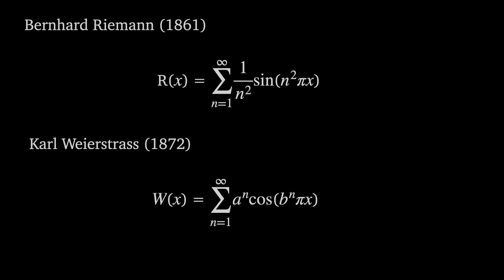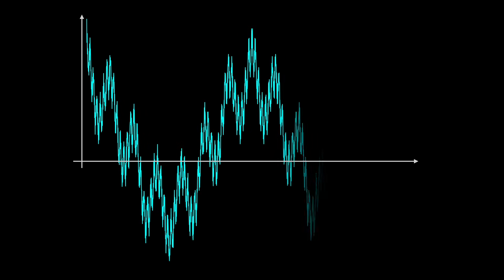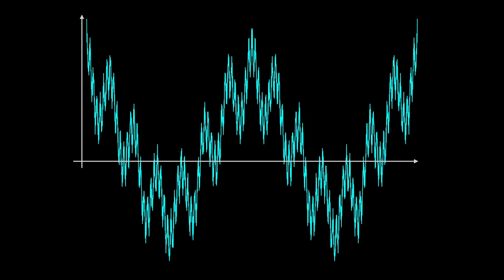Weierstrass's version replaced the 1/n² term with a constant a to the power n, the sine with a cosine, and the n² term with a constant b to the power n. Although in Weierstrass's original publication he had a and b the other way around — I'm just sticking with the more modern convention. You might notice that what Weierstrass did was write down the Fourier series of some unknown function and then ask: how can I make this continuous but nowhere differentiable? And I think this is all the more impressive given that this was before we had good ways to visualize what this function might look like.